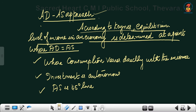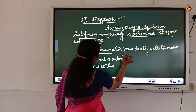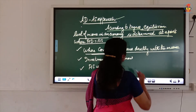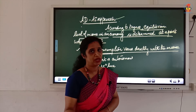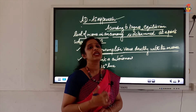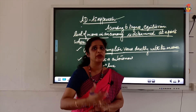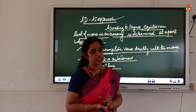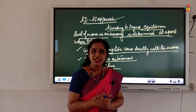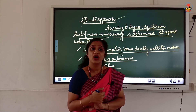Based on these assumptions, Keynes explained his AD-AS approach. According to Keynes, equilibrium level of income is determined where AD equals AS — a state of balance between the two. Consumption varies directly with income; when income increases, consumption also increases but by less than the increase in income, reflecting the marginal propensity to consume.